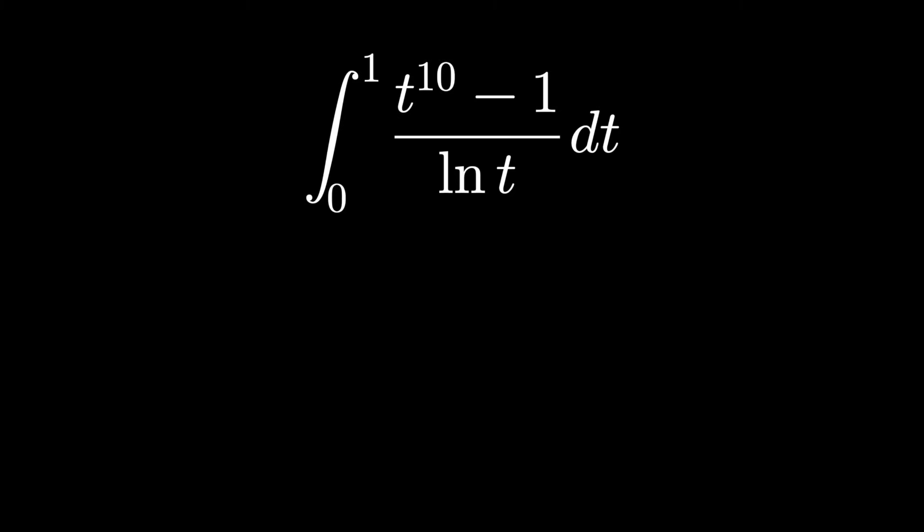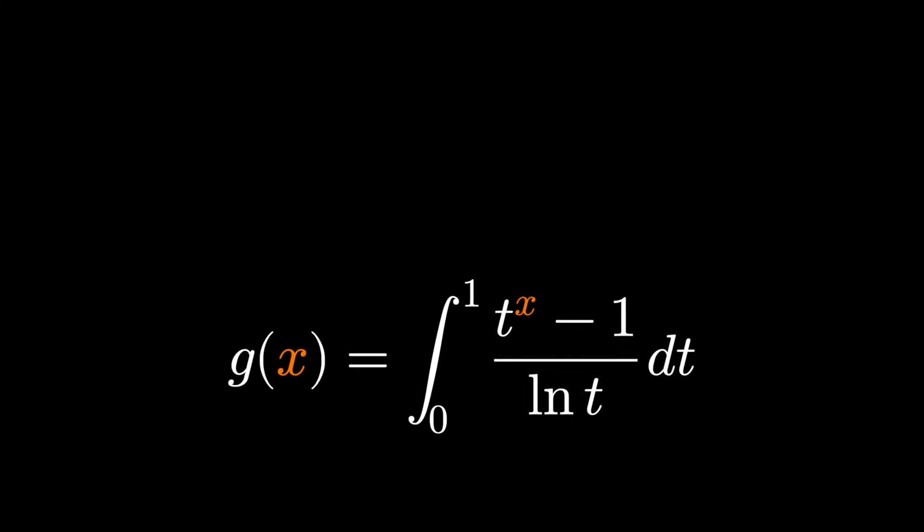What we'd like to do is differentiate under the integral sign in a way that makes our problem easier. To do that, we're going to have to define a new function so that when we take the derivative, it's a different variable than t. Let's define things this way.